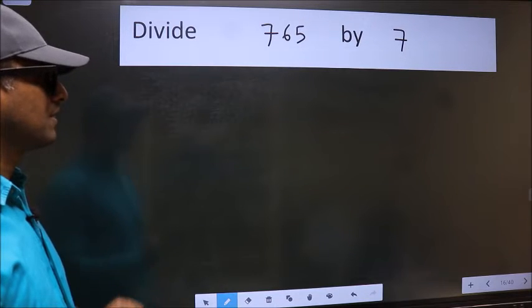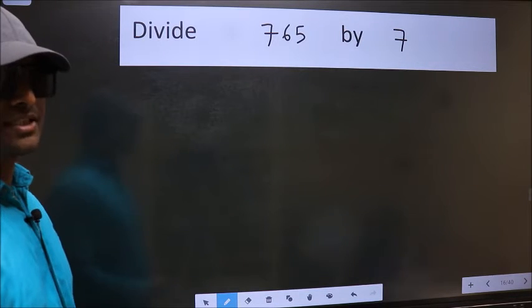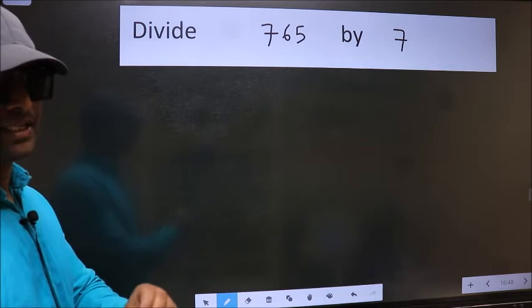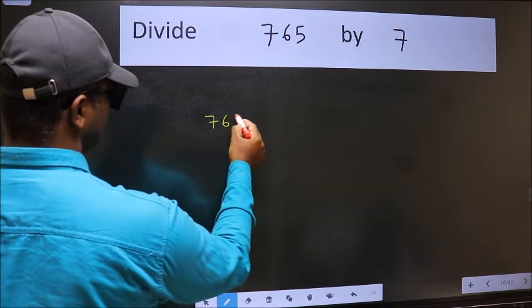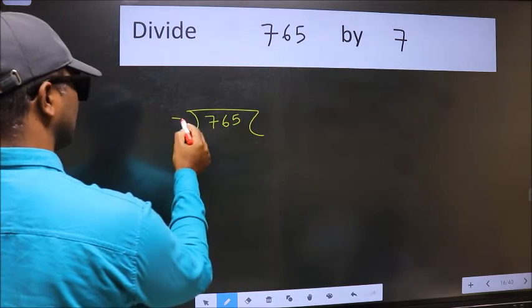Divide 765 by 7. To do this division we should frame it in this way: 765 here and 7 here.